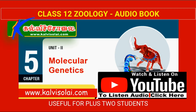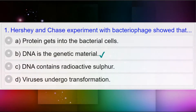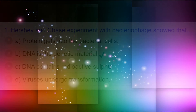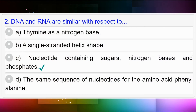Question number one: The Hershey and Chase experiment with bacteriophage showed that — option A: protein gets into the bacterial cells; option B: DNA is the genetic material; option C: DNA contains radioactive sulfur; option D: viruses undergo transformation. Answer to question number one is option B: DNA is the genetic material.